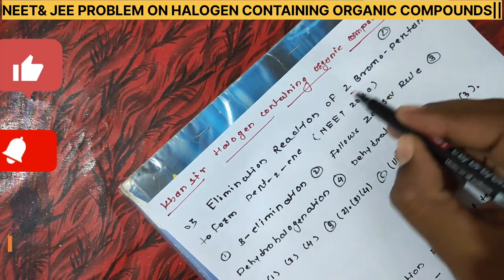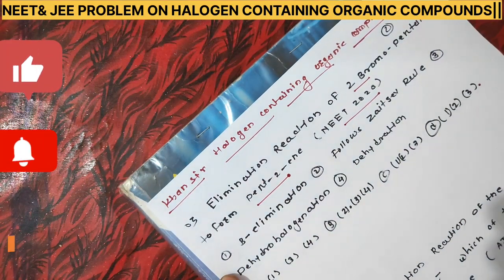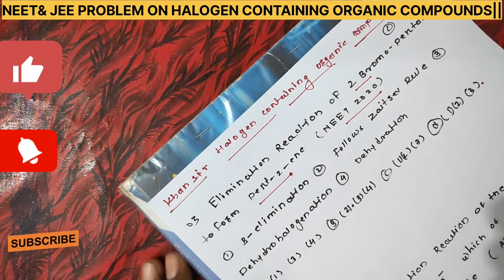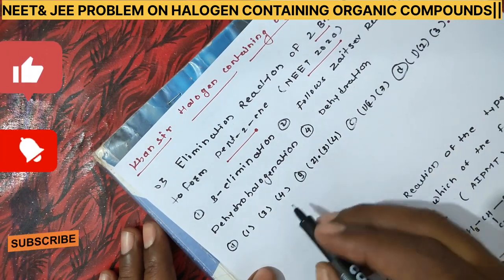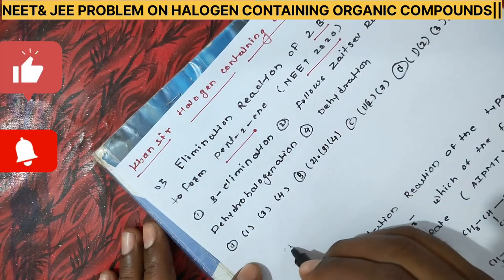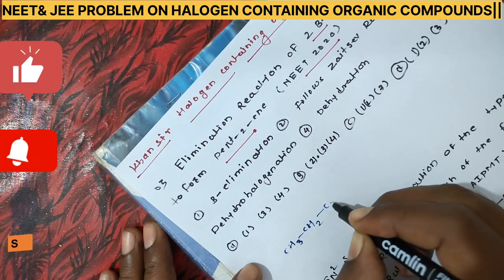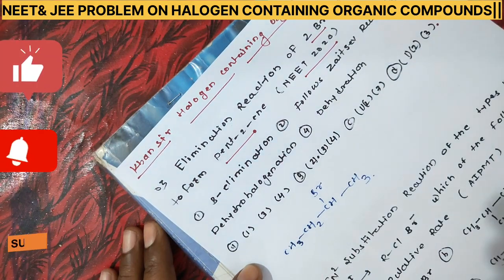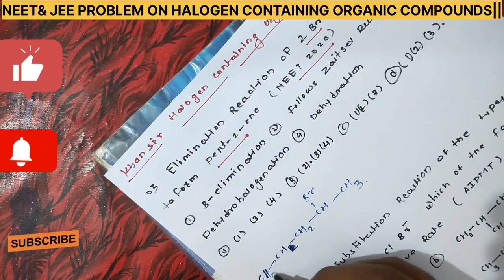The next question asks about the elimination reaction of 2-bromopentane to form pentene-2, from NEET 2020. You need to tell the sequence of steps. As you know, in beta elimination, the compound given is 2-bromopentane: CH₃–CH₂–CH(Br)–CH₂–CH₃.